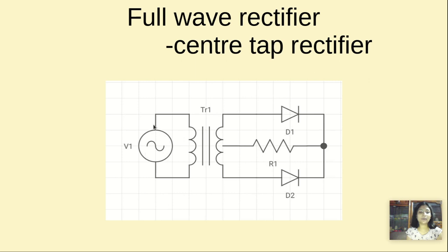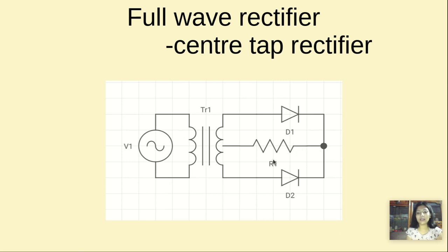Now let us see what happens in the positive cycle. When this terminal is positive and this is negative, this makes diode D1 to be in forward bias, but diode D2 to be in reverse bias. So the current flows from the positive side through D1, in this direction to R1, and we get an output voltage in the positive cycle. In the negative cycle, when this terminal is negative and this one is positive, diode D2 will be in forward bias and diode D1 will be in reverse bias. So the current flows through the positive side through D2, and again in the same direction to R1, giving us output voltage. The polarity remains the same in both cycles, and we get output in both cycles.